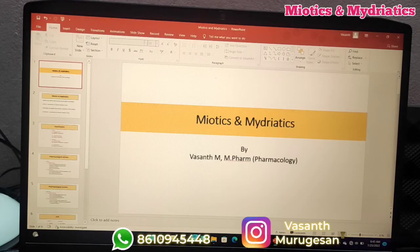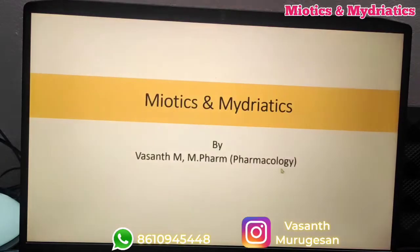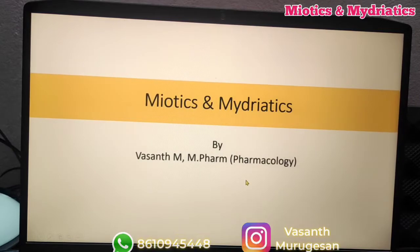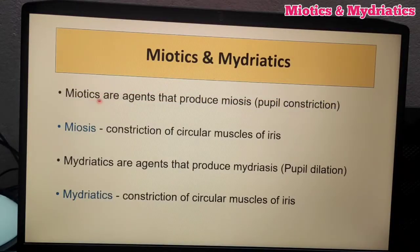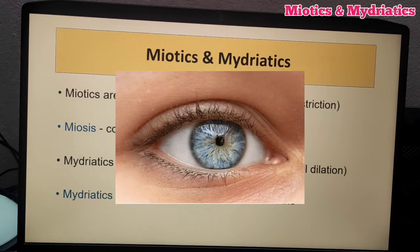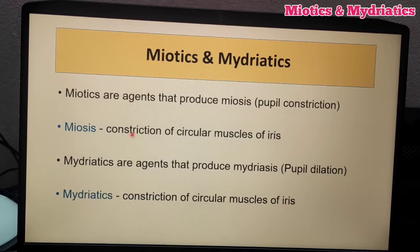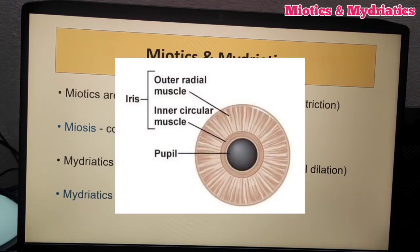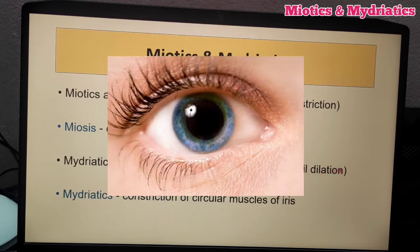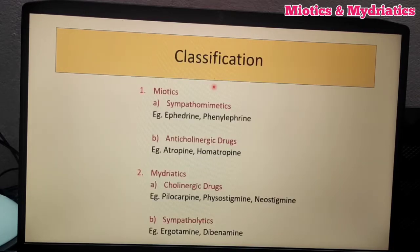Drugs acting on the eye. The two main topics are miotics and mydriatics. Miotics are drugs or agents that produce miosis. In the body, there are two types of muscles: one is a circular muscle and one is a radial muscle. That is why the pupil is dilated.